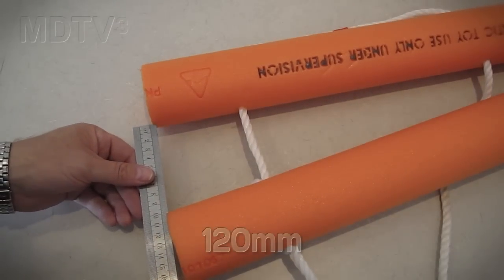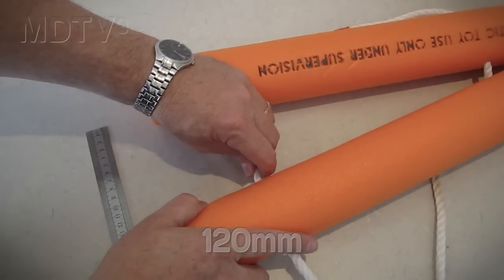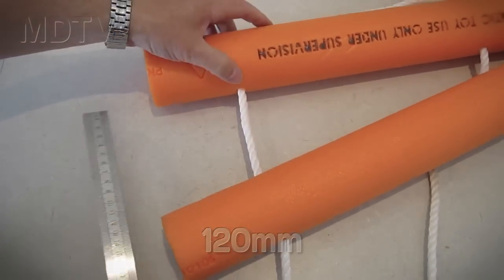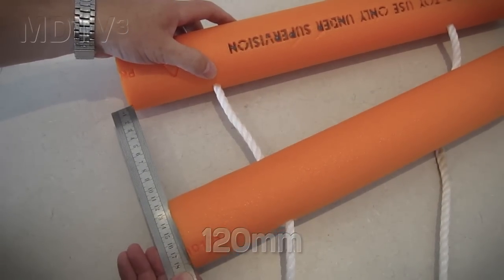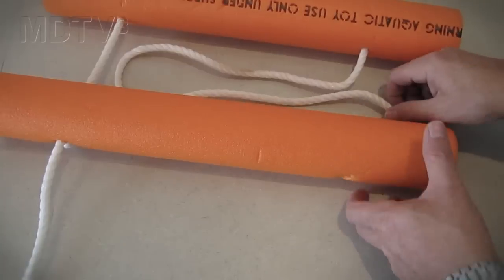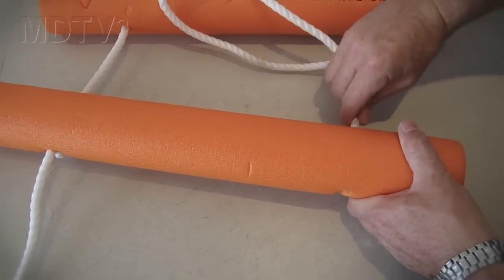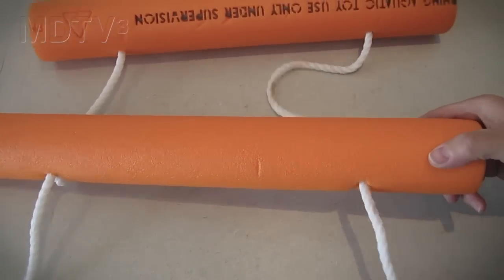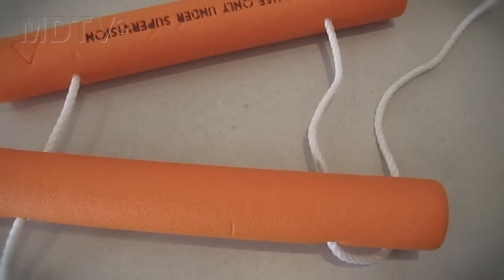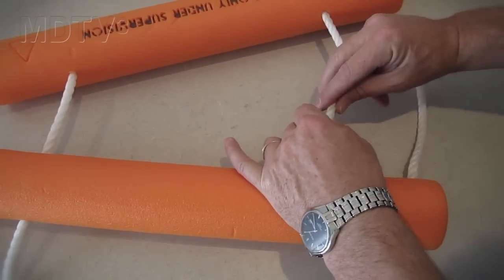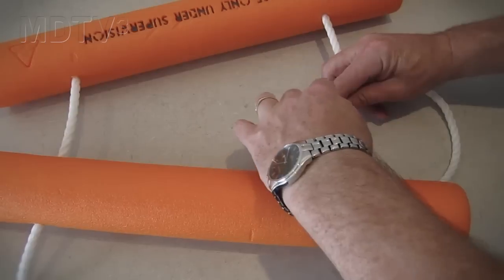Position the pool noodles so that they are approximately 120 millimeters apart. Thread the other side of the rope through the remaining hole. Loop the rope back around the middle pool noodle and tape it to the rope that already goes through the hole.